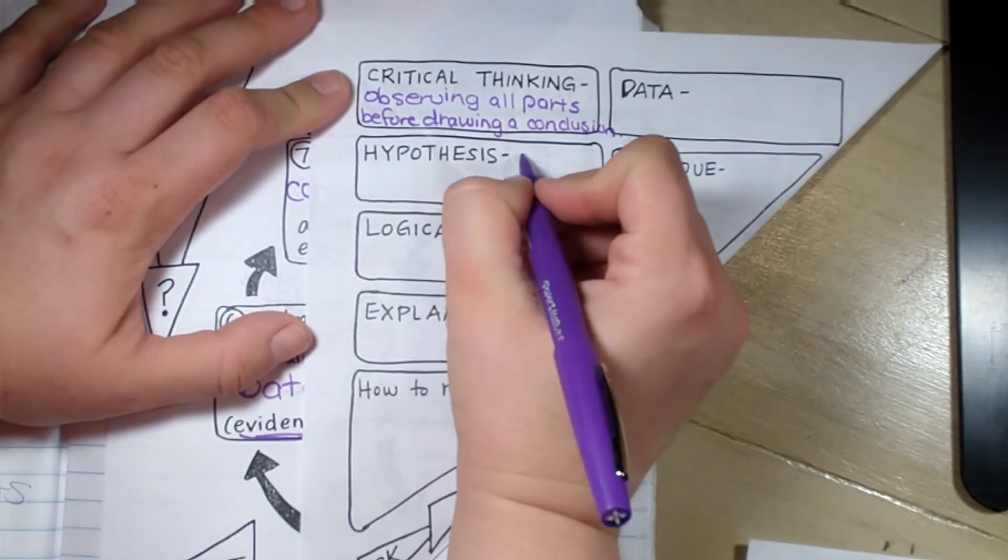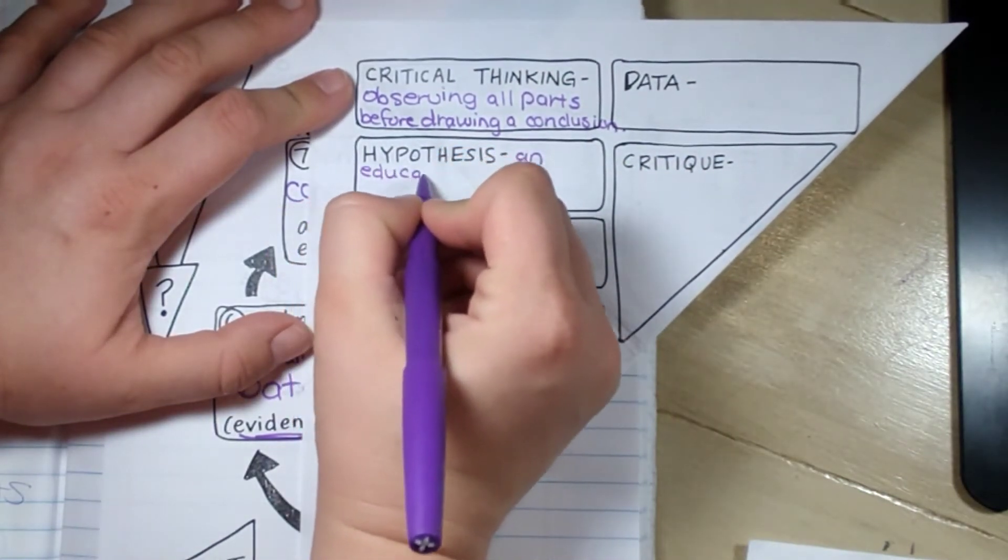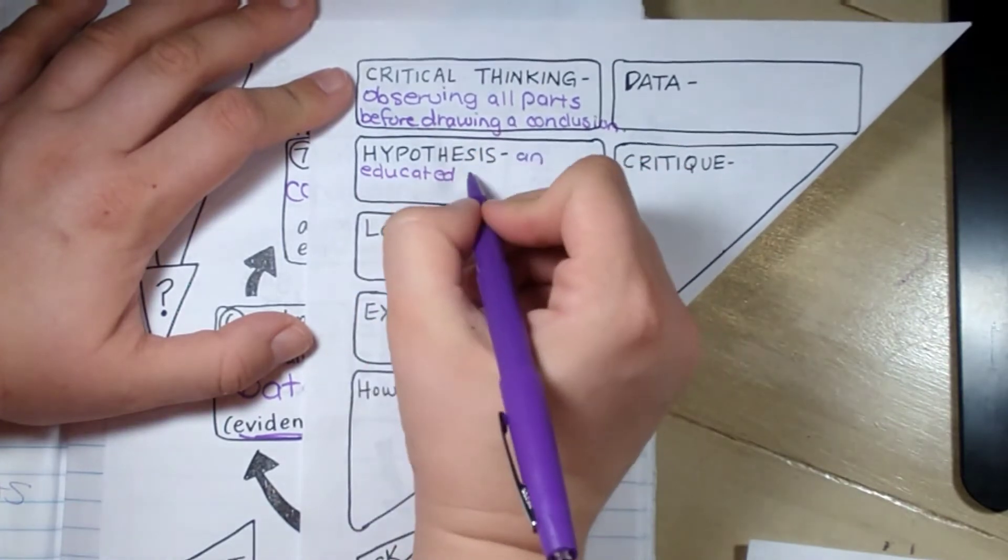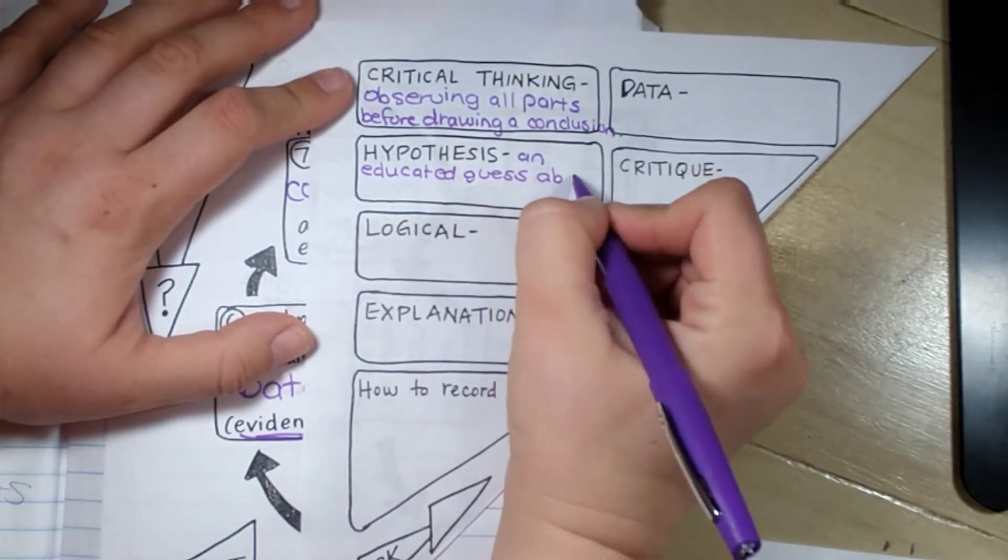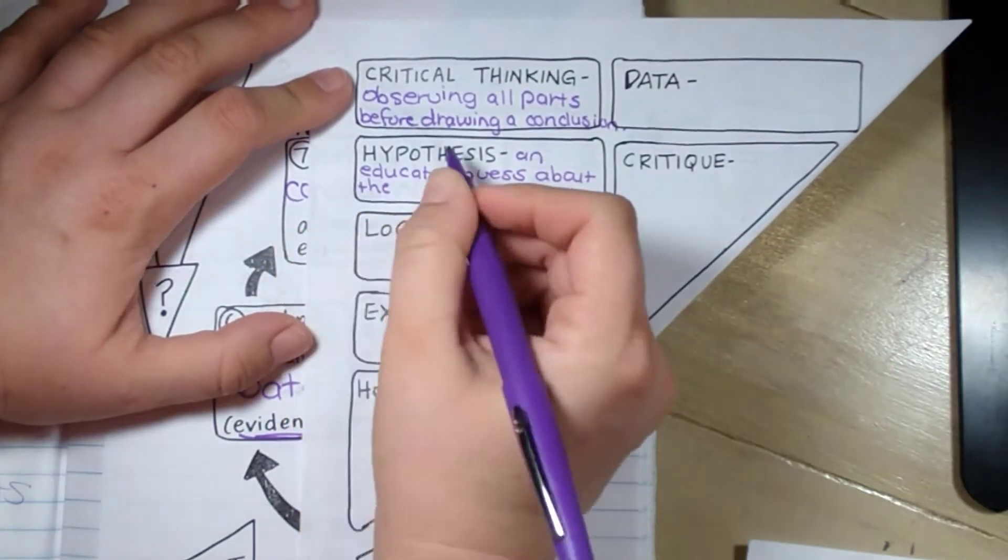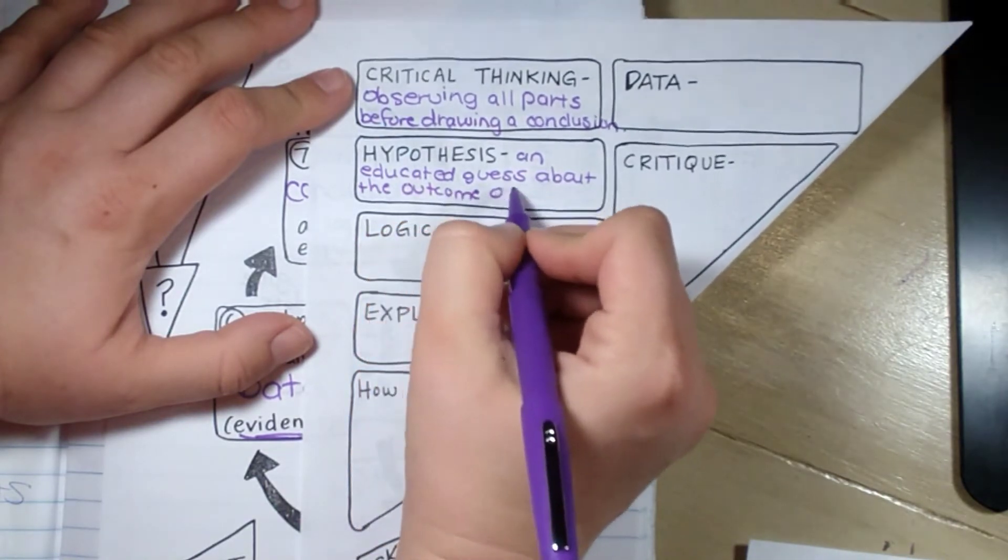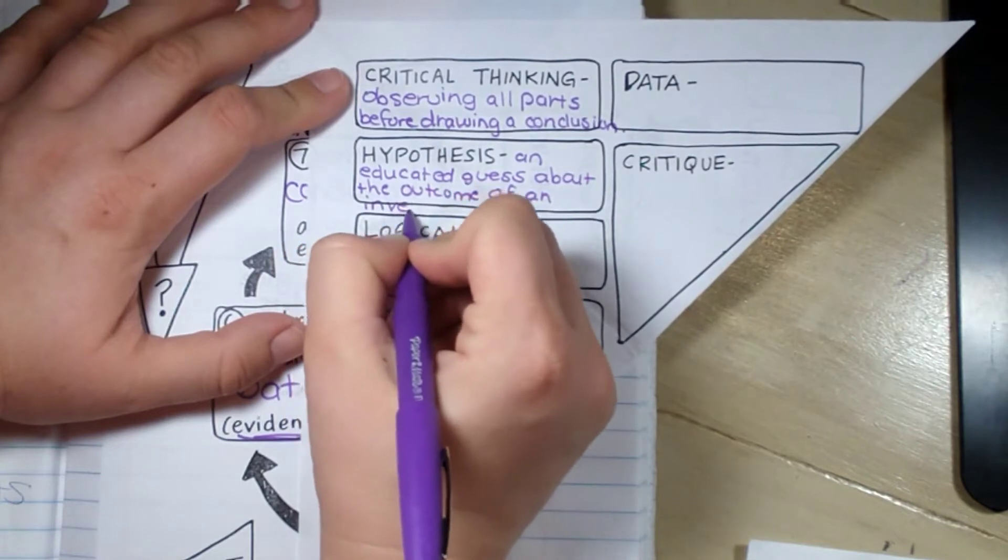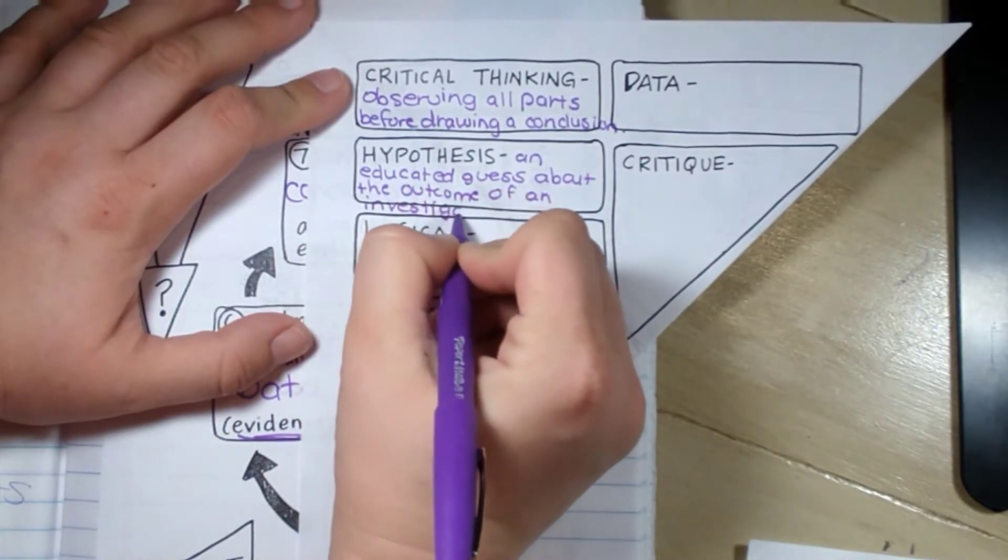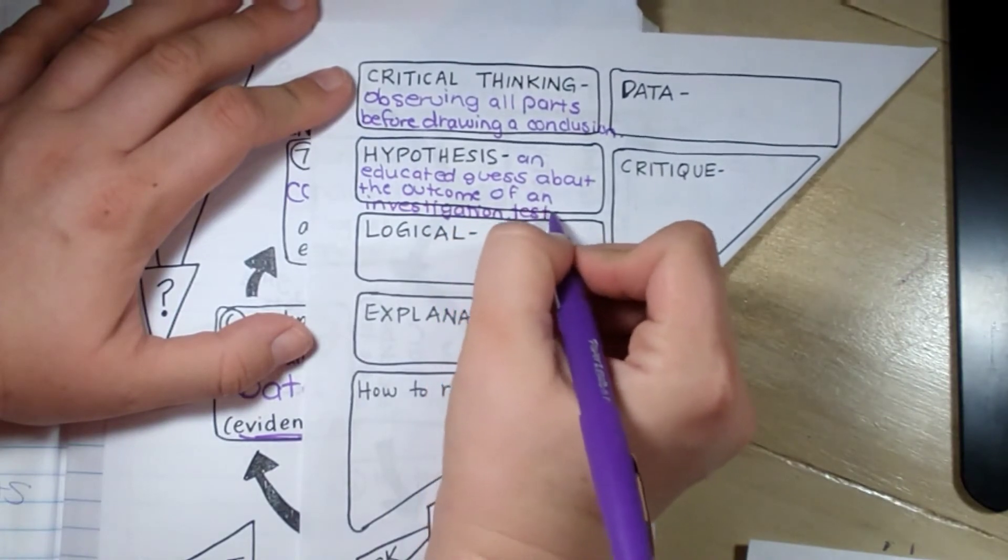The next thing is a hypothesis. As I mentioned before, it's an educated guess about what you think will happen. And it has to be testable. Can I test if I'm right or wrong?